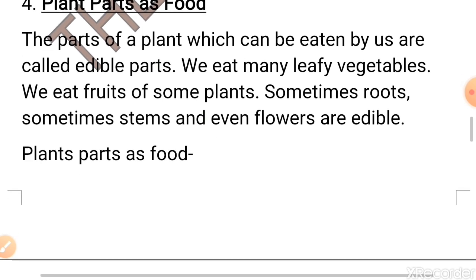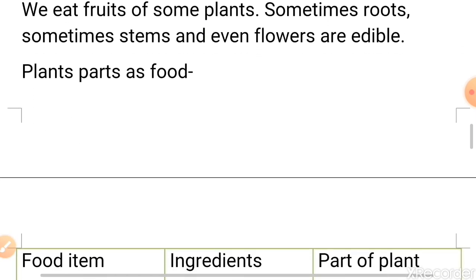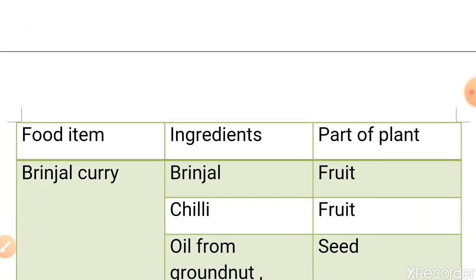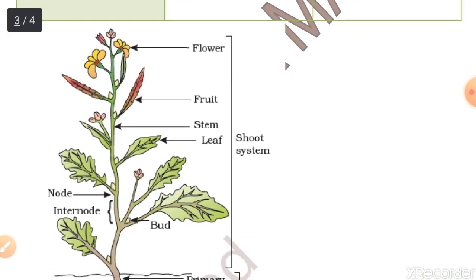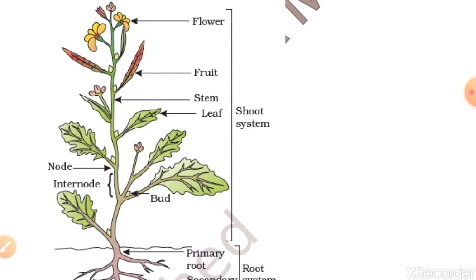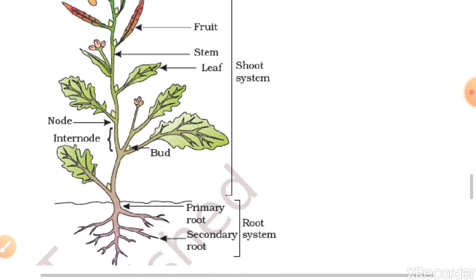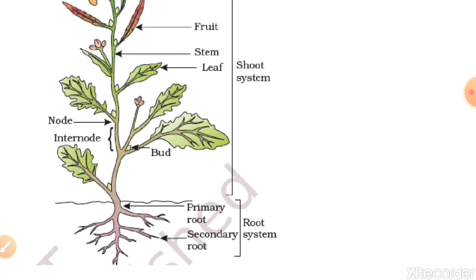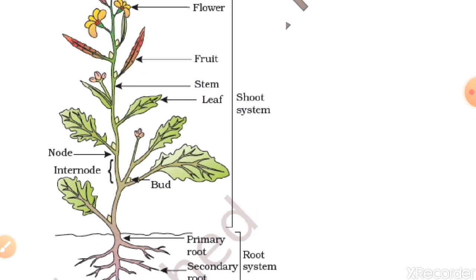I have made a drawing so you can understand the various parts of a plant. Here you can see flowers, fruit, stem and leaf — they all build the shoot system. The shoot system also includes buds, nodes and internodes. Moving ahead — root system. There are two types of roots: primary and secondary. These were the parts of a plant.